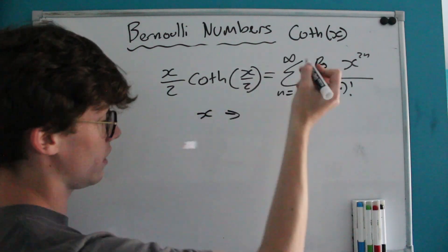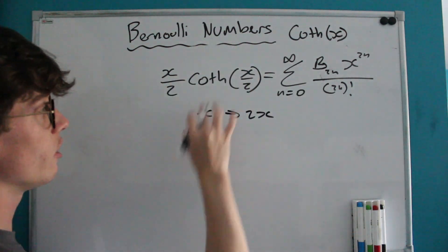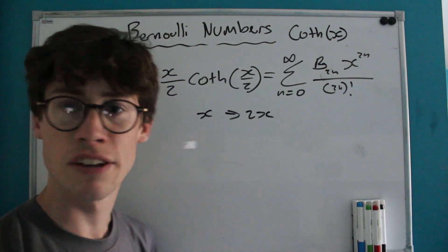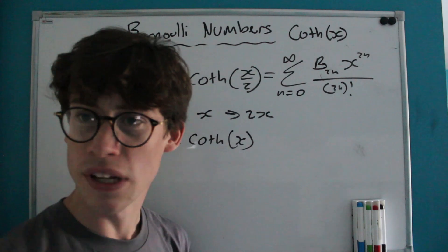Now our next step is going to be making the transformation of X to 2X, and that's because we want to find hyperbolic cotangent of X, not hyperbolic cotangent of X/2.